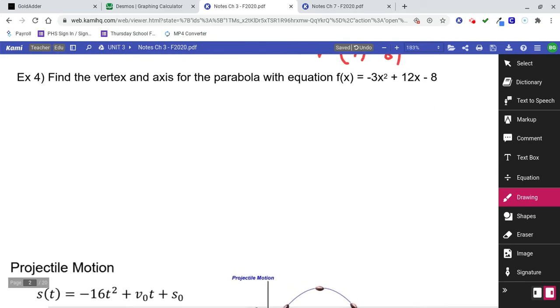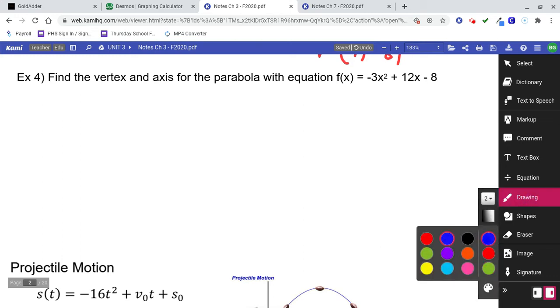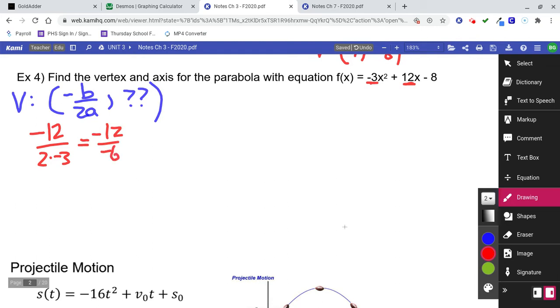Number 4. Find the vertex and axis for the parabola with this equation. So we have a formula for the vertex. We know that the vertex is going to be given by negative b over 2a, comma, whatever you get when you plug that in. So let's do negative b over 2a. Negative b is 12 in this problem and a is negative 3. So over 2 times negative 3. That's negative 12 over negative 6, which is 2.